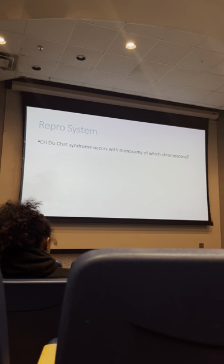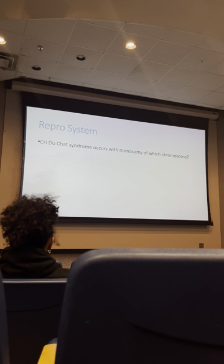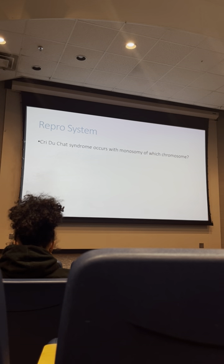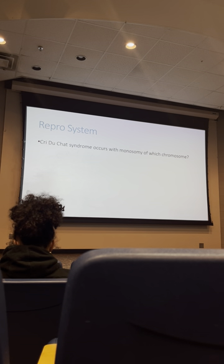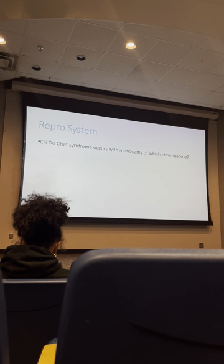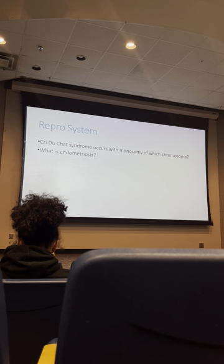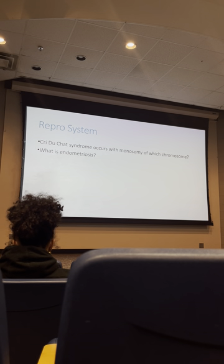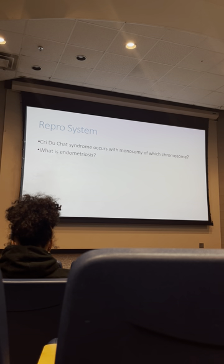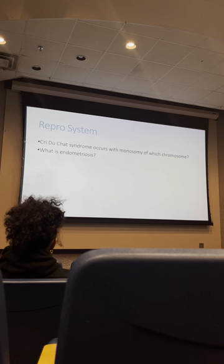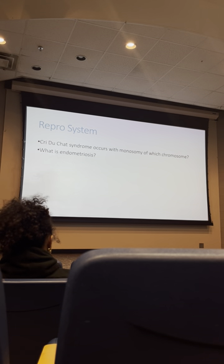Cri du Chat syndrome occurs with deletion or monosomy of chromosome 5, which contains the gene for the protein CTNND2 (catenin delta 2), extensively used in the nervous system for maintaining neuronal health — linked to severe intellectual impairments. It was formerly called cat's cry syndrome because patients have deformities of the nasal bridge, making their vocalizations sound like a cat.